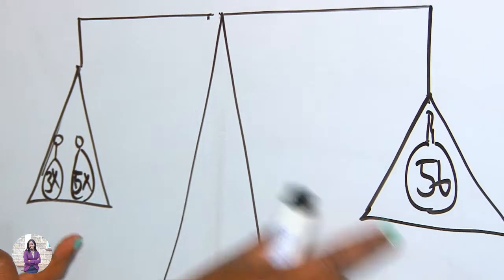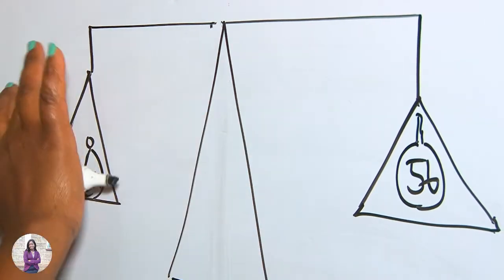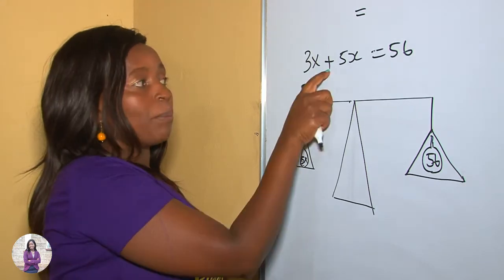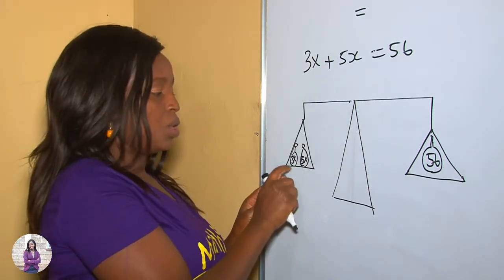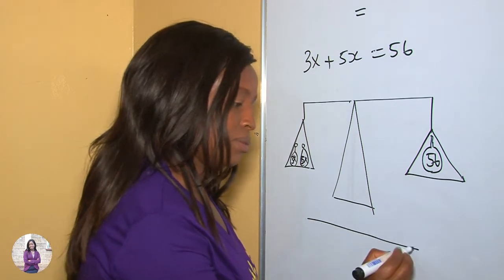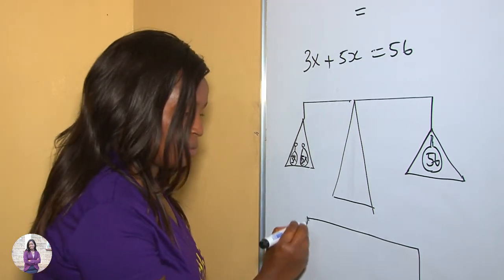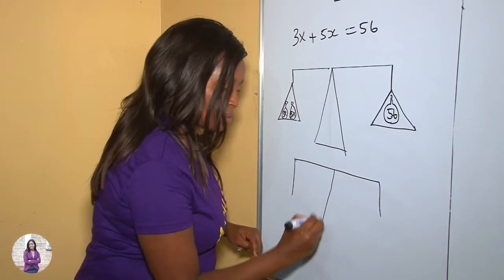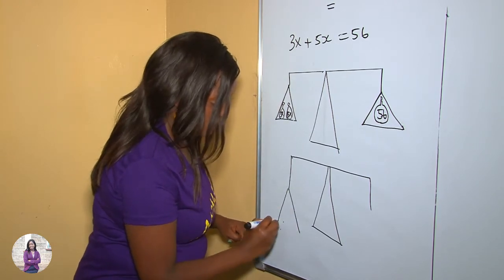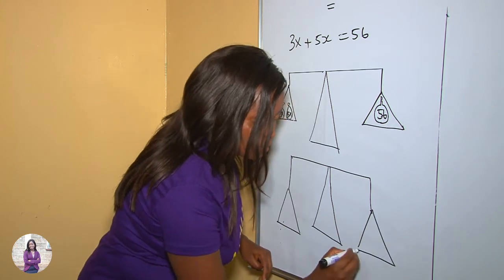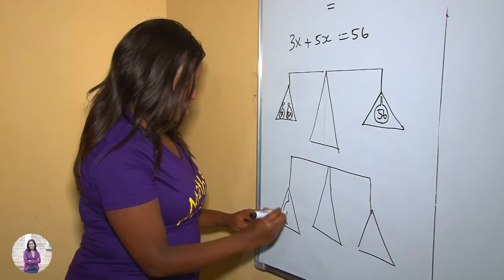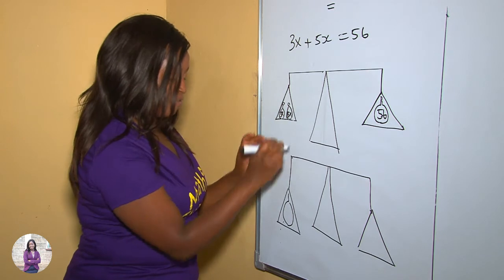56, as you can see they are balanced, none that is up or down, they are balanced, meaning this side and this side are equal. Now whatever is on this side we put it together, and as you can see they are like terms. So these two baskets when you put them together to become one basket, it's going to be something of this nature. There will be a bag containing 3x plus 5x which is 8x.